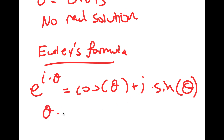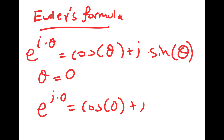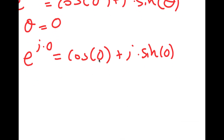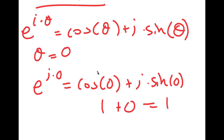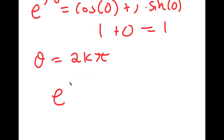So let's say that theta is equal to 0. Then we have e to the power of i times 0, which equals cosine of 0 plus i times sine of 0. Cosine of 0 is equal to 1, and sine of 0 is 0. So I have 1 plus 0, which is equal to 1. Now, if theta is equal to 2k pi, then e to the power of i times 2k pi is equal to 1, which represents a full unit circle.